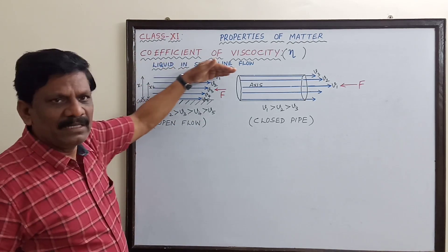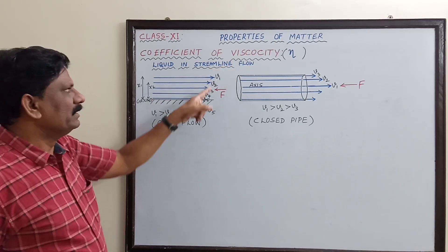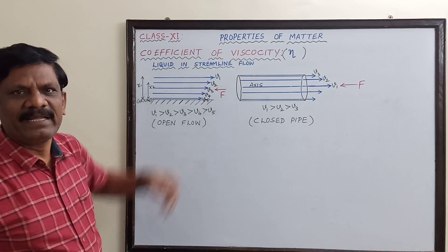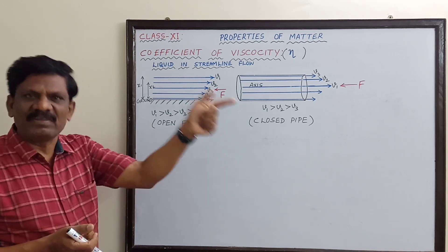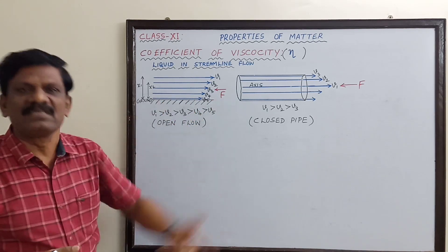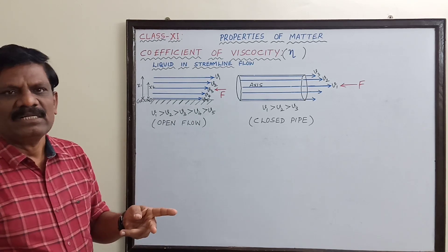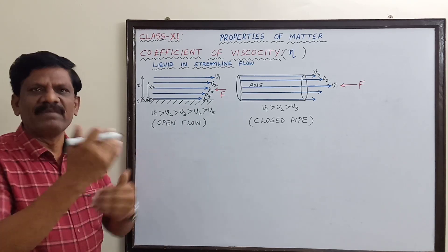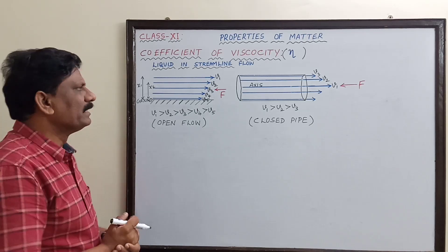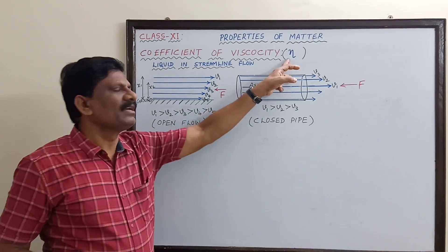move to the right. This will be opposed by the second layer — the second layer will try to resist the motion of the first layer. Similarly, the third layer will resist the motion of the second layer. This opposing force is called the viscous force.